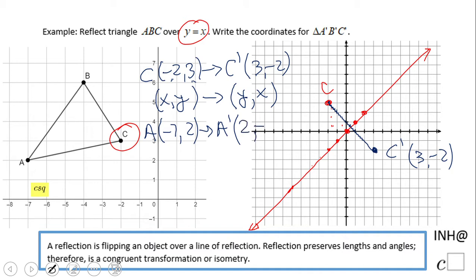So, point B, which was negative 4 and 6, will be B prime, and we switch again. 6 and negative 4.